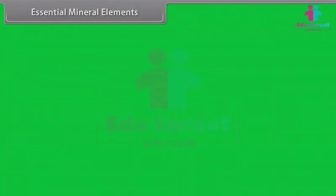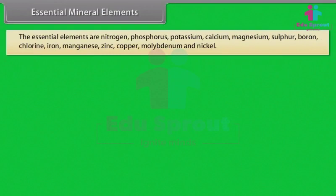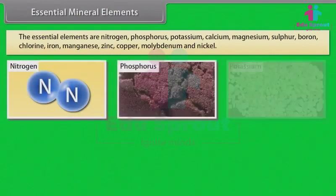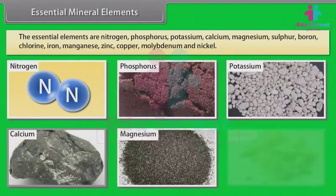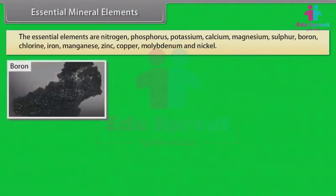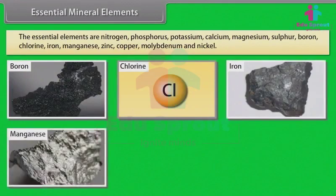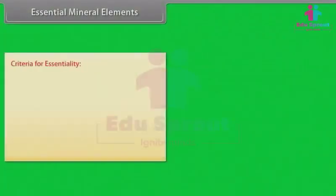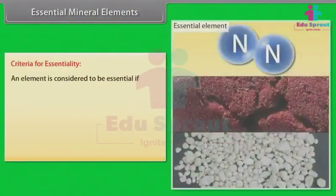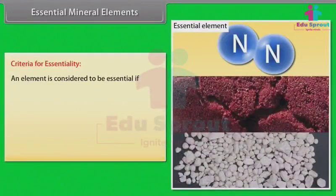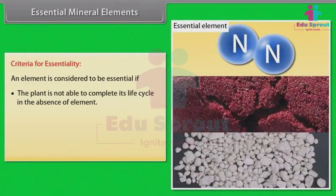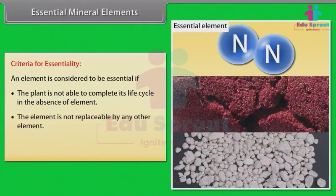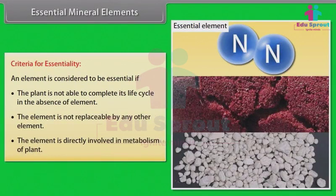The essential mineral elements are nitrogen, phosphorus, potassium, calcium, magnesium, sulfur, boron, chlorine, iron, manganese, zinc, copper, molybdenum, and nickel. Criteria for essentiality: an element is considered essential if the plant is not able to complete its life cycle in the absence of that element, the element is not replaceable by any other element, and the element is directly involved in the metabolism of the plant.